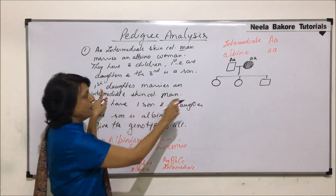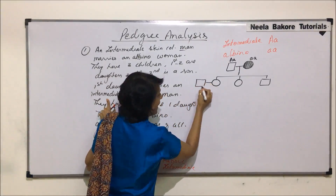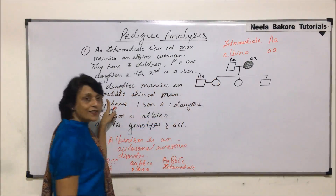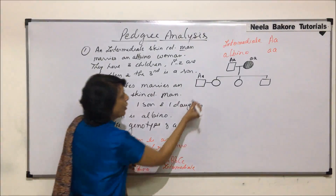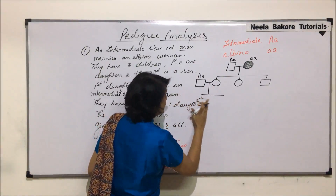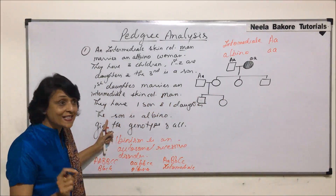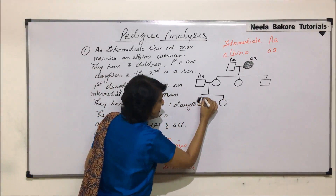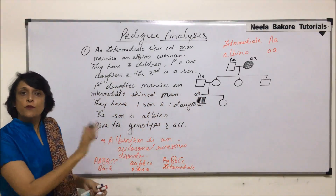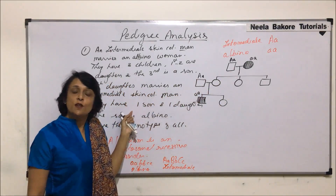The first daughter marries an intermediate skin-colored man, so she gets married and the man is represented as heterozygous. They have one son and one daughter. The son is albino, so his genotype is homozygous recessive. We have written the genotypes on the basis of the information given to us in the question.